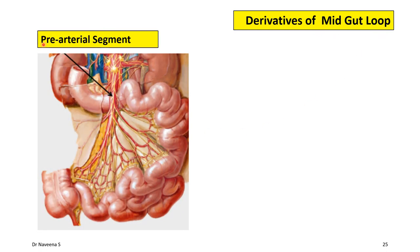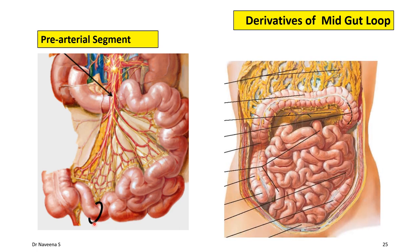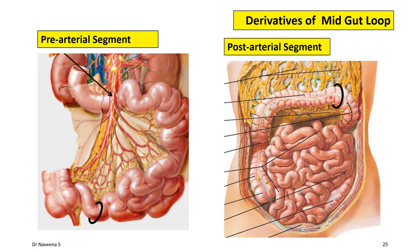Let's see the derivatives of the midgut loop in their adult position. The pre-arterial segment derivatives are the lower part of the duodenum passing deep to the superior mesenteric artery, followed by the coils of the jejunum and ileum till its terminal part, from where the post-arterial segment derivatives start. These are the terminal part of the ileum, cecum and appendix, ascending colon, and right two-thirds of the transverse colon. This means the transverse colon has a dual developmental origin: its right two-thirds derived from the midgut, whereas its left one-third is derived from the hindgut.